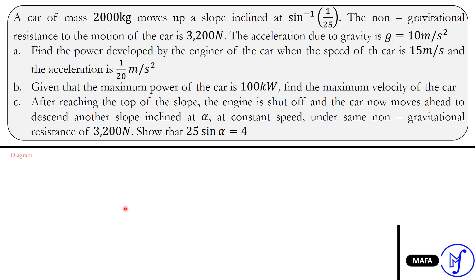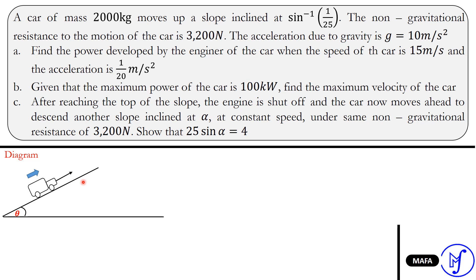The first thing to do when faced with problems of this kind is to draw the diagram. The car is moving on an inclined slope — here is my horizontal and the inclined slope is at angle theta to the horizontal, where theta = sine inverse of 1/25. Since the car is moving up the slope, we have a driving force F pulling it up, the non-gravitational resistive force R, and the component of the weight parallel to the inclined slope, W2. I won't include the perpendicular weight component and normal reaction to keep the diagram clean.